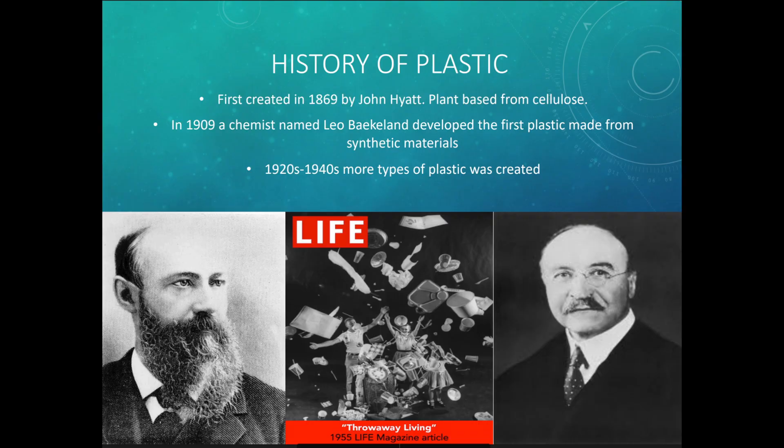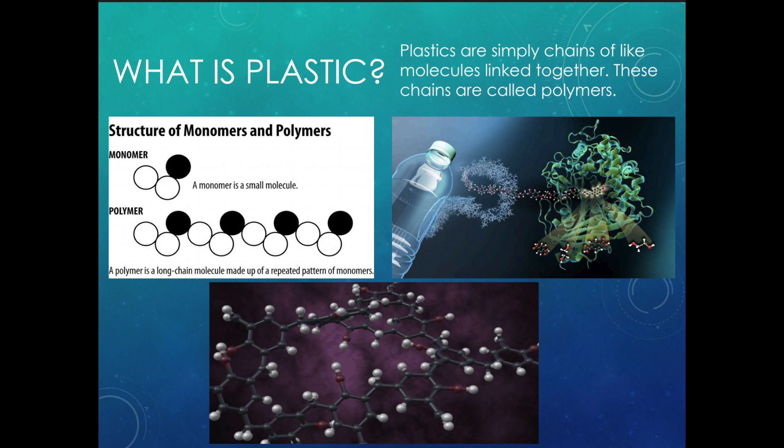Let's talk about the history of plastic quickly. It was first created in 1869 by a man named John Hyatt, and it was made from cellulose, which is plant-based — so the first plastic ever was plant-based. In 1909, a chemist named Leo Baekeland developed the first synthetic plastic. Synthetic means artificial, man-made, not natural. The first modern plastic was created in 1909 — over 100 years ago — made out of non-natural substances. Then in the 1920s through the 1940s, even more types of plastic were created.